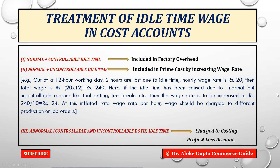To understand the treatment of idle time in cost accounts, you must understand the classification and causes of idle time. As already discussed in video one: if idle time is normal and controllable in nature, it should be included in factory overhead. If it is normal and uncontrollable in nature, it should be included in prime cost. And if it is abnormal idle time, it should be charged to costing profit and loss account. These are the three possible treatments.